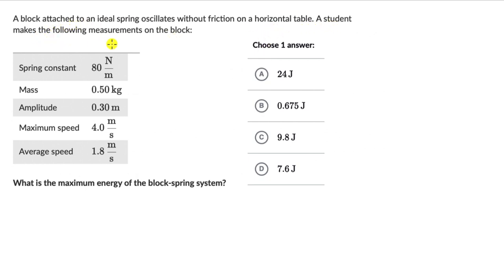A student makes the following measurements on the block. So we have the measurement of spring constant, mass that is 0.5 kilograms, amplitude, maximum speed and average speed. What is the maximum energy of the block spring system? And we need to choose one answer out of these four options.